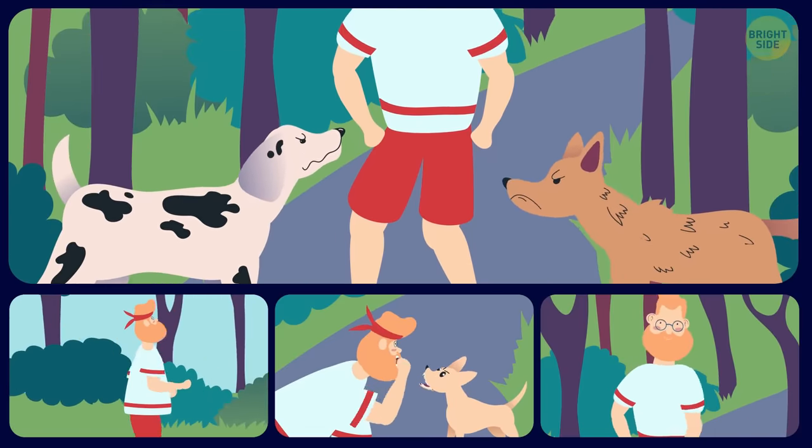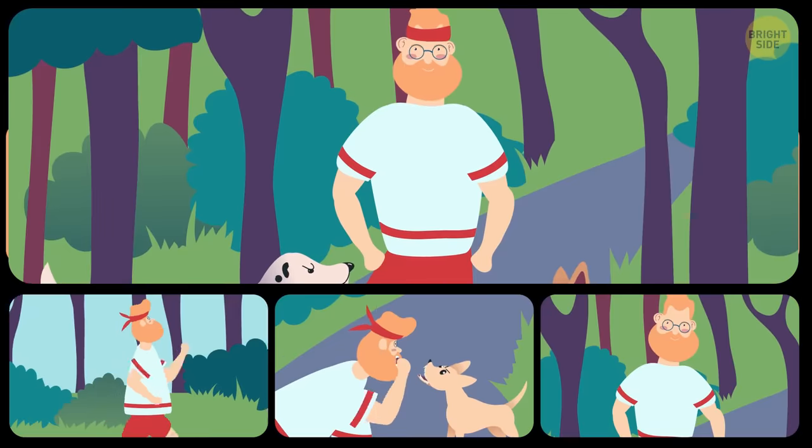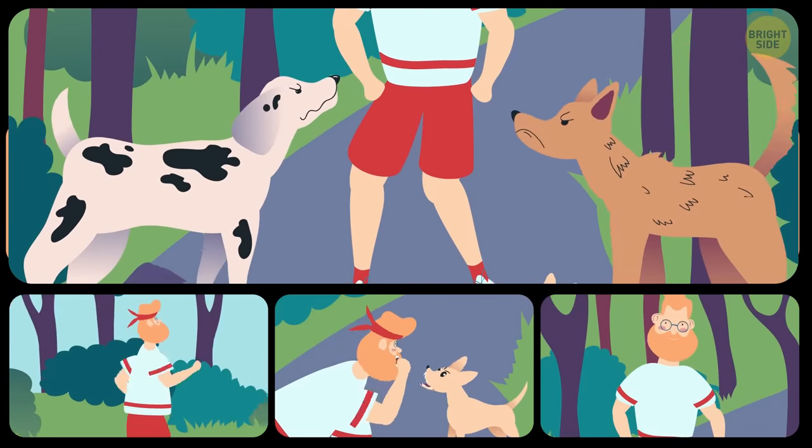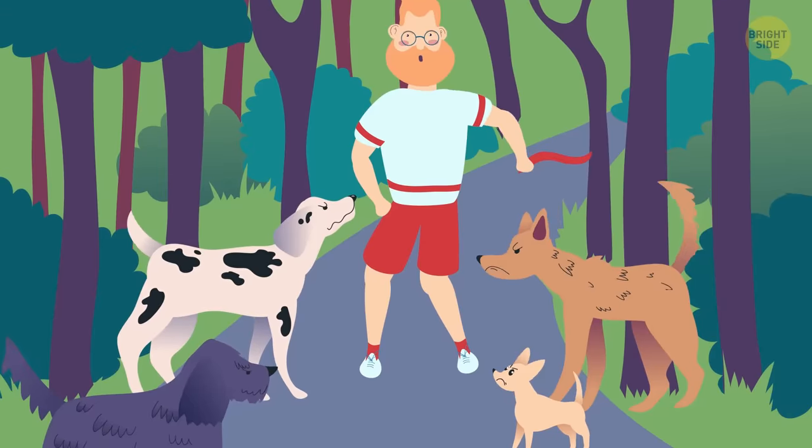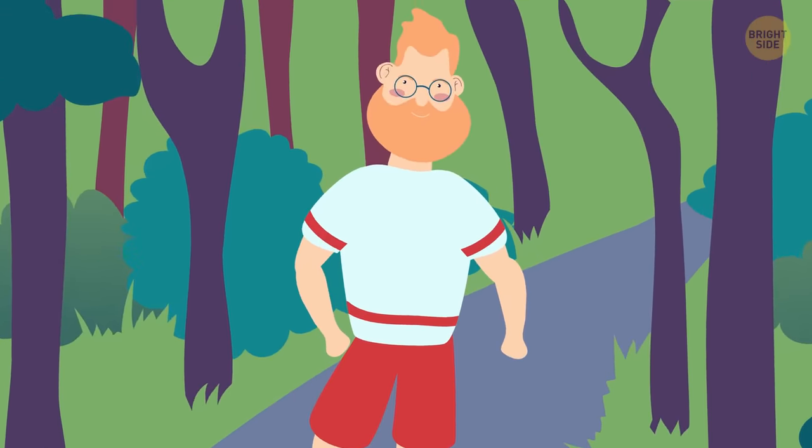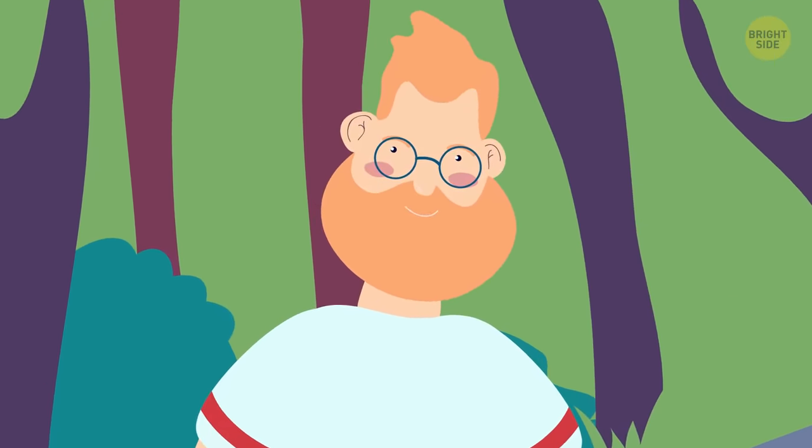The only way you can get out of such an encounter unscathed is to distract the dogs and quietly move away. Answer C. If one of the dogs still lunges at you, do your best to place some object between you and the animals' jaws.